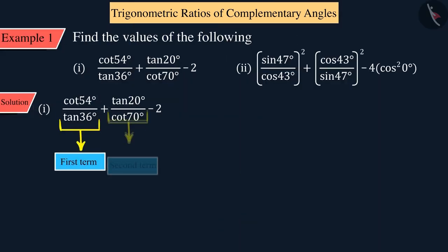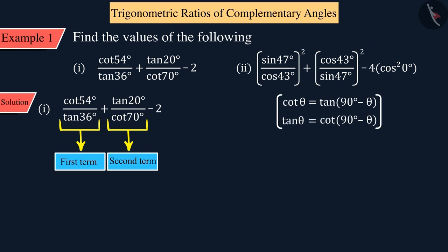Therefore, here in the first and second terms, we will either change the cot to tan or tan to cot. Because we know that cot θ equals tan(90° - θ) and tan θ equals cot(90° - θ).